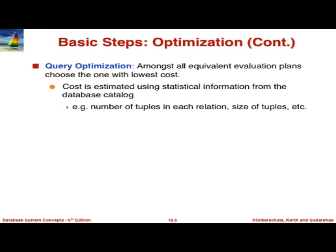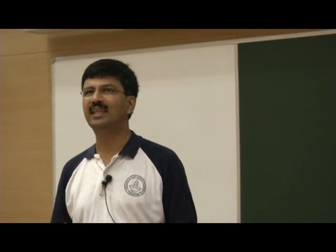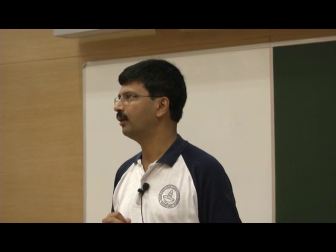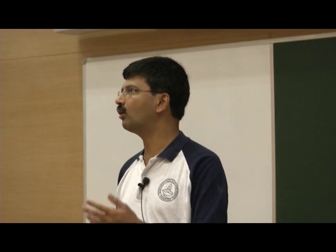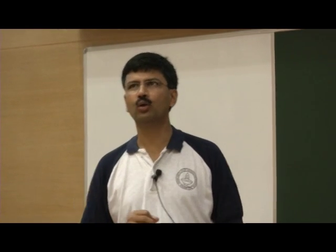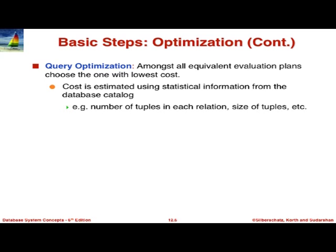We are not covering query optimization, but just to tell you what it is: the goal is, among all equivalent evaluation plans which generate the same result, pick one. But how do you pick one? You need a way to estimate how much time it will take — the cost of the plan. All of this is based on a way of estimating costs of various alternatives. Cost estimation is covered in detail in chapter 13, which I am not going to cover. But that is the underpinning for algorithms to choose between different plans.